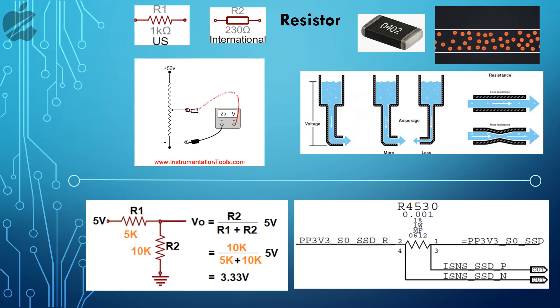A resistor is the obstacle to current or electron flow. Current flowing through a resistor can change the voltage drop across it, which can be measured to identify the current.